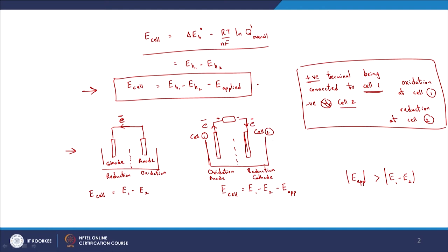If you connected in reverse — meaning your negative terminal to cell 1 and positive terminal to cell 2 — then E_applied would have to be considered as negative. That transforms this variable to be overall positive. This sign or symbol is remarkably important: the negative symbol is relevant to the positive terminal being connected to cell 1, and that is something you need to consider.